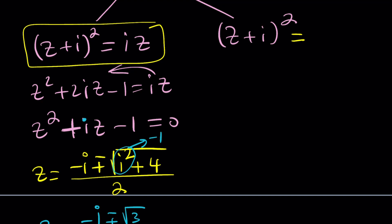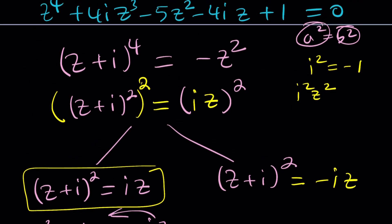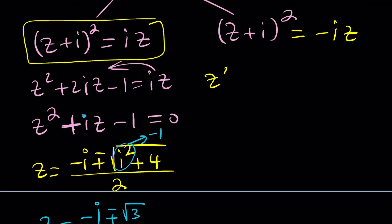But the second case, basically, is when this equals negative IZ. So you've got to remember there are two numbers whose square equals I squared Z squared. And those are IZ and negative IZ. If you go ahead and do the same thing here, Z squared plus 2IZ plus I squared equals negative IZ. And then bring it to the left, you're going to get something similar. But with a different coefficient, of course.